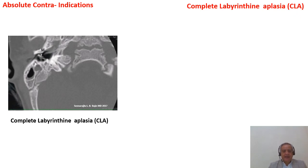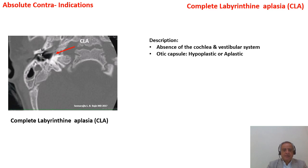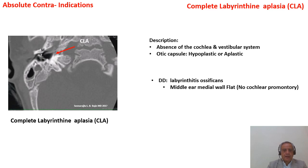Starting with complete labyrinthine aplasia: as its name implies, there is no labyrinthine structure — no cochlea, no vestibular system. By its description, there is absence of cochlea and vestibular system, sometimes associated with a hypoplastic or aplastic otic capsule. It is usually well-diagnosed by imaging, but sometimes it can be missed by diagnosing labyrinthitis ossificans. The main diagnostic feature of labyrinthitis ossificans is that you will find the cochlear promontory, but here there is a flat medial wall of the middle ear.